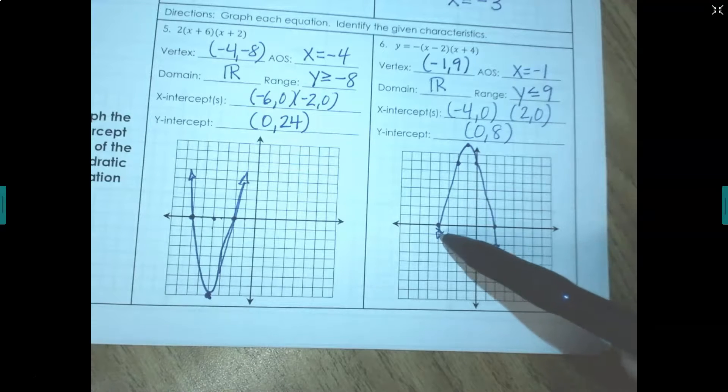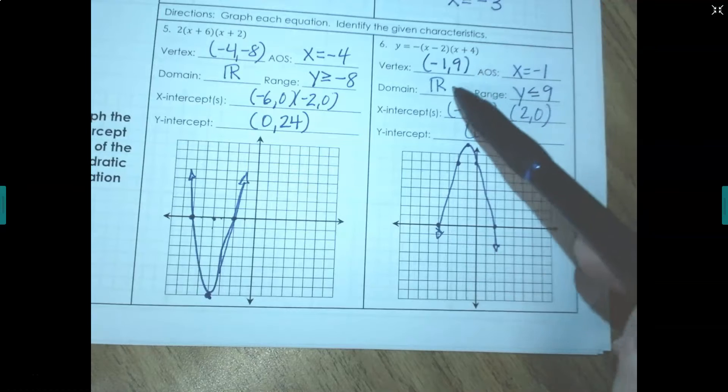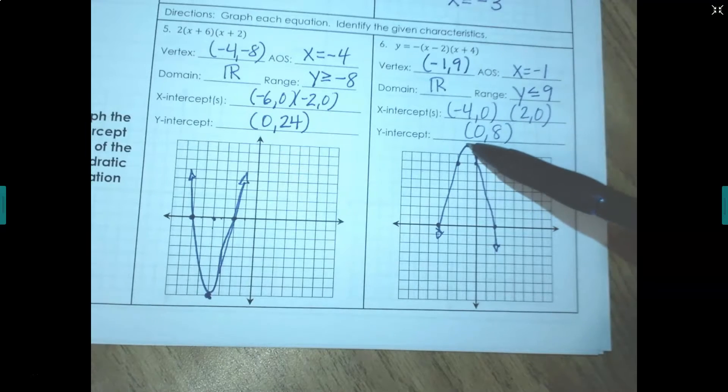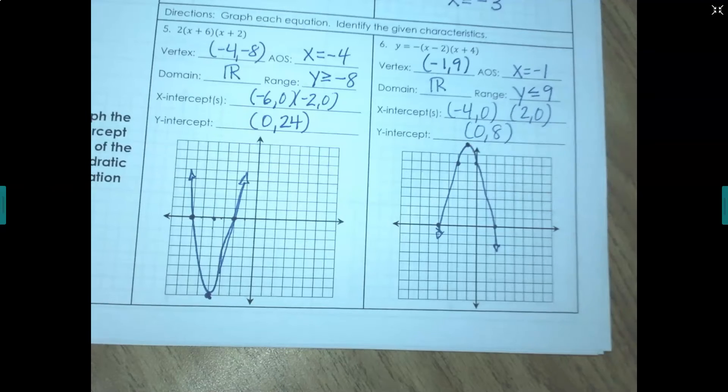Non-real world problems, our graph is never ending left to right, so our domain is all real numbers. Your range, the entire graph is below the vertex, so it's less than and your vertex y value is 9, so the entire graph is less than or equal to 9.